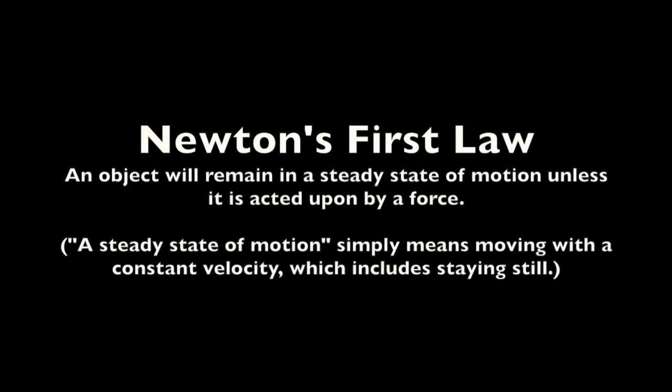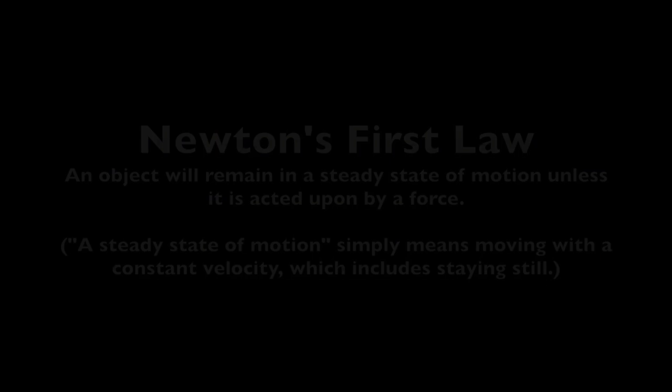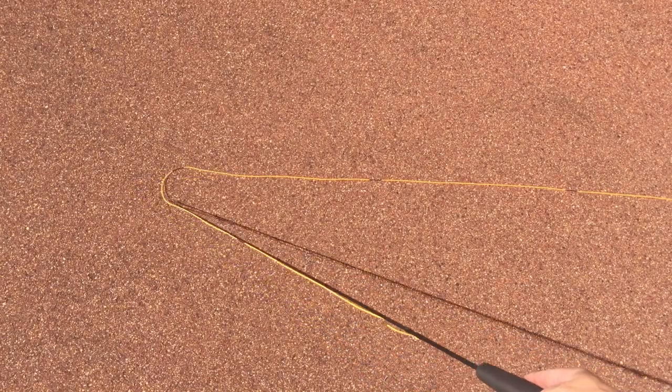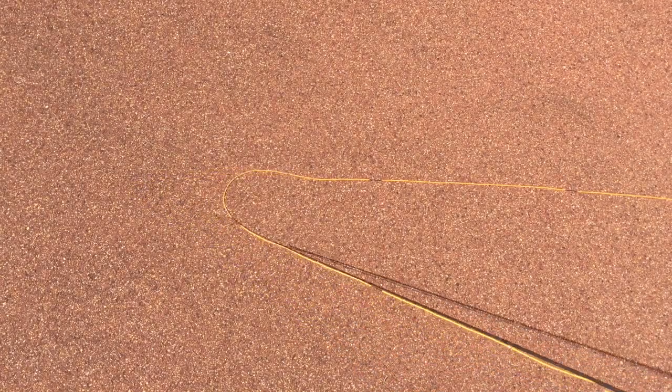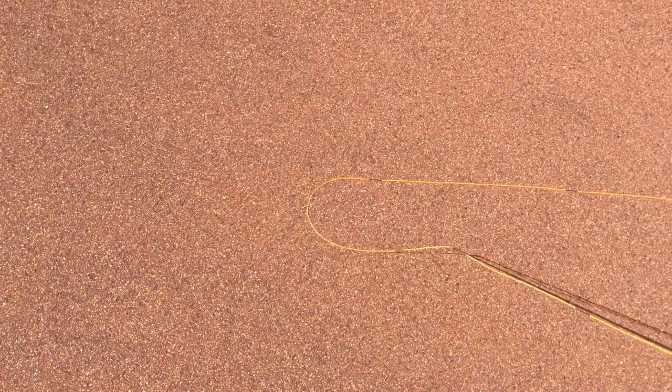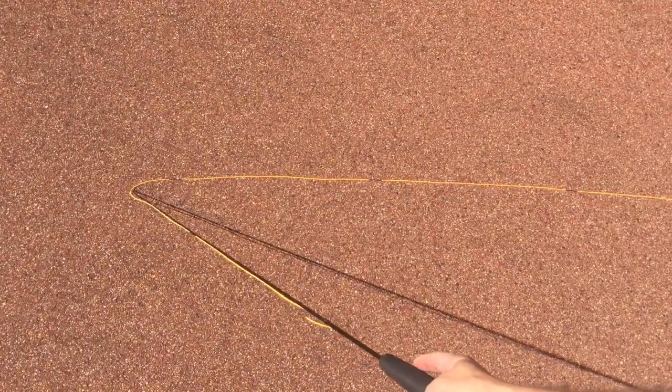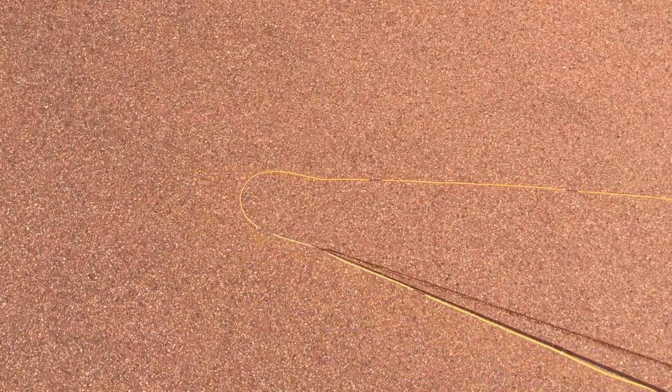Newton's first law is that an object will remain in a steady state of motion unless it is acted upon by a force, and that includes stationary — that's a steady state of motion. Here we've got the fly leg stationary at the top of the image, and tension is applied to the rod leg. Notice that we don't need to do anything to the fly leg except pull it with the rod leg to create a loop.